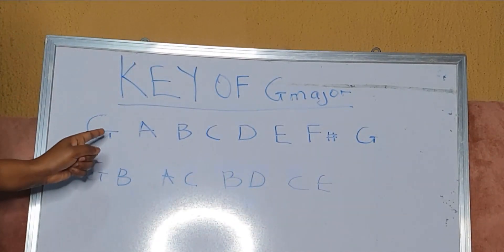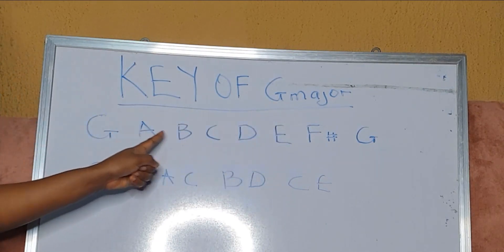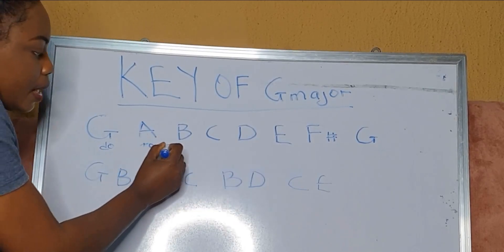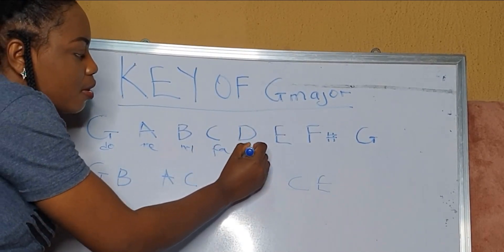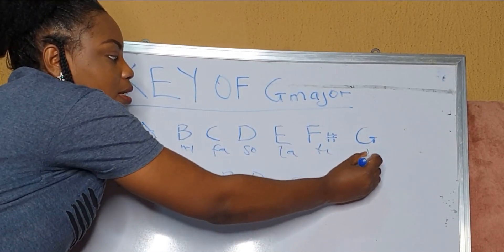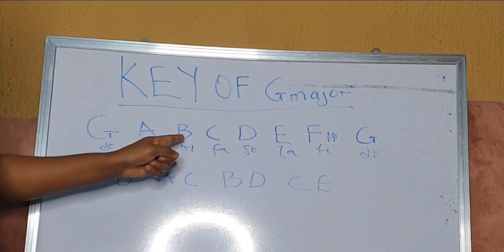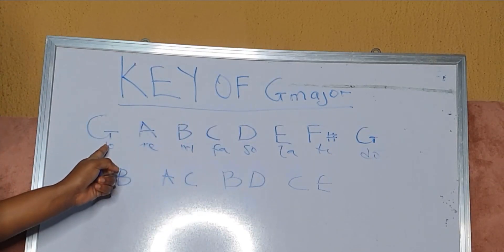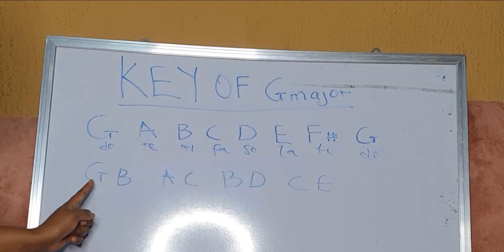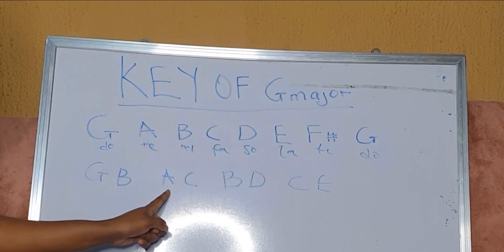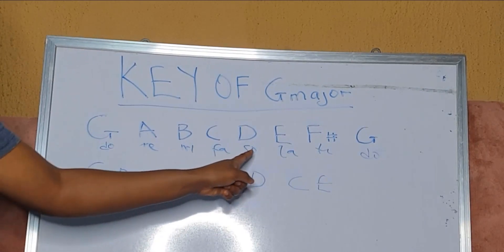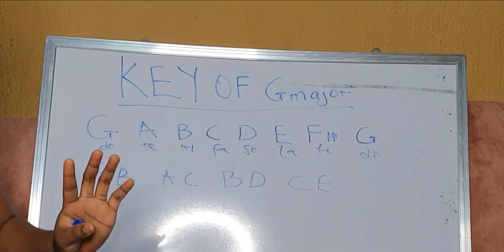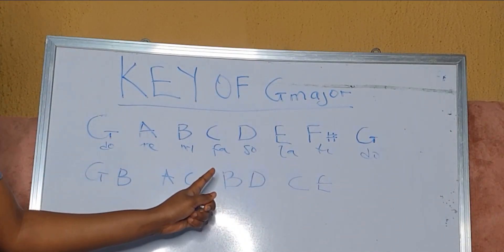Some people actually look at this using solfège notation. If you're looking at these notes as solfège, your G scale would be Do, Re, Mi, Fa, Sol, La, Ti, Do. So you'd have Do-Mi, Re-Fa, Mi-Sol — that gives you the same pairs: G-B, A-C, B-D, and so on.